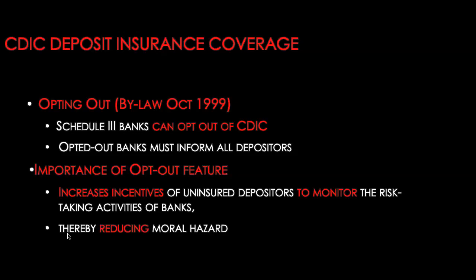That brings us to the end of this chapter. Overall, we have learned that the regulatory framework is a constant work in progress — regulators are always trying to identify the information gaps in the system and developing regulations to address those gaps. Our main regulatory bodies in Canada are the Bank of Canada, the Office of the Superintendent of Financial Institutions (OSFI), and the Canada Deposit Insurance Corporation. Most developments in the regulatory framework increase the incentives for banks to hold capital and decrease their incentives to take on excessive risk.